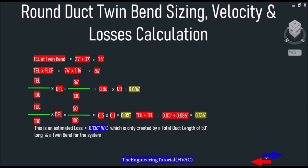Then for the main duct, by dividing the total length of the main duct — which is 50 feet — by 100 and multiplying by the design friction loss of 0.1, we get a loss of 0.05 inch of water column. Finally, adding the main duct loss of 0.05 to the tee-band equivalent length loss of 0.086, we get a total loss of 0.136 inch of water column.